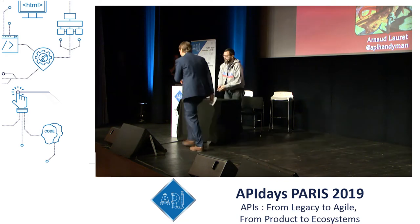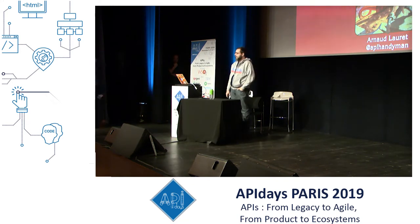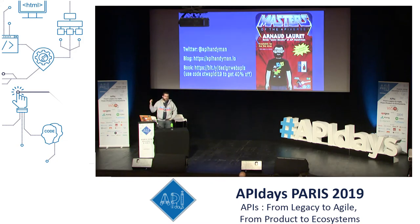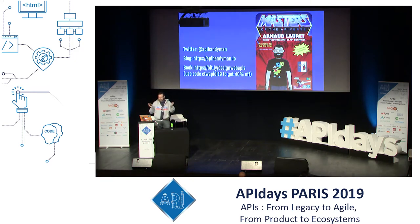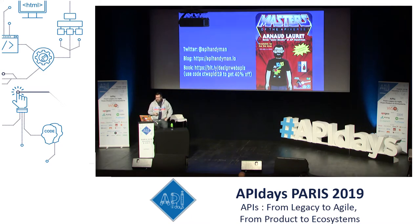So I'll let you take it away, Arnaud. Hello, everyone. My name is Arnaud Loray. I'm a senior API architect at Natixis — it's a French banking group. Some may know me as the API Handyman. You can follow me on Twitter, read my blog. I did not write so many blog posts until recently because I was spending most of my free time writing a book called The Design of Web APIs. And hopefully it's over now and I can get back to a normal life and talk about API design reviews today.